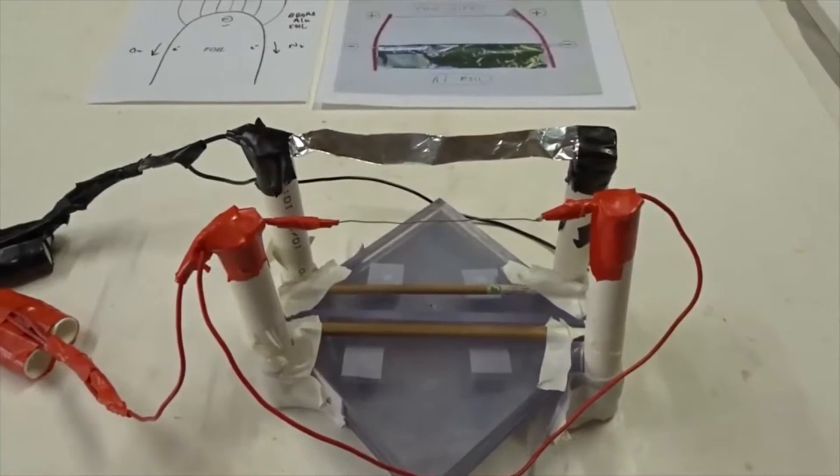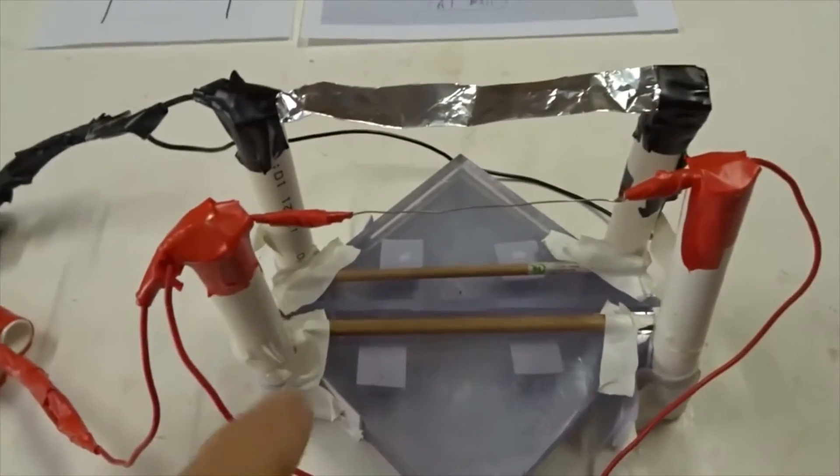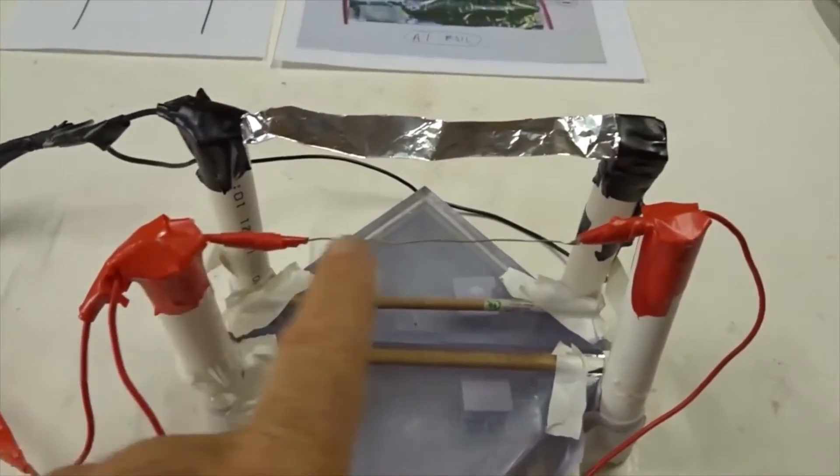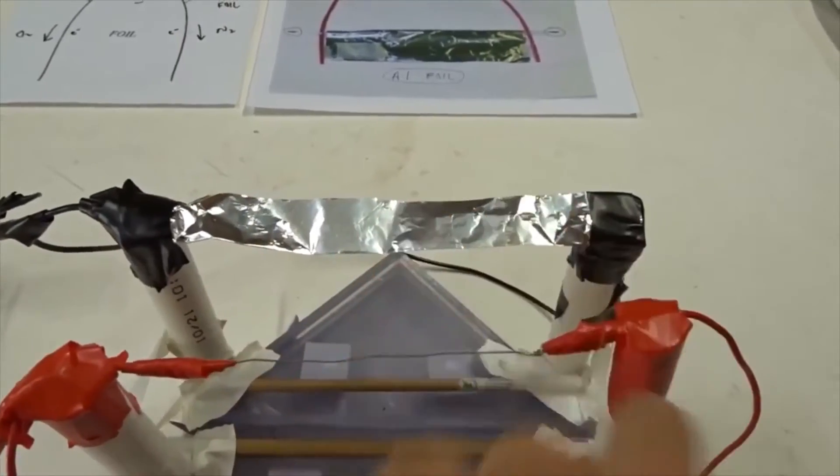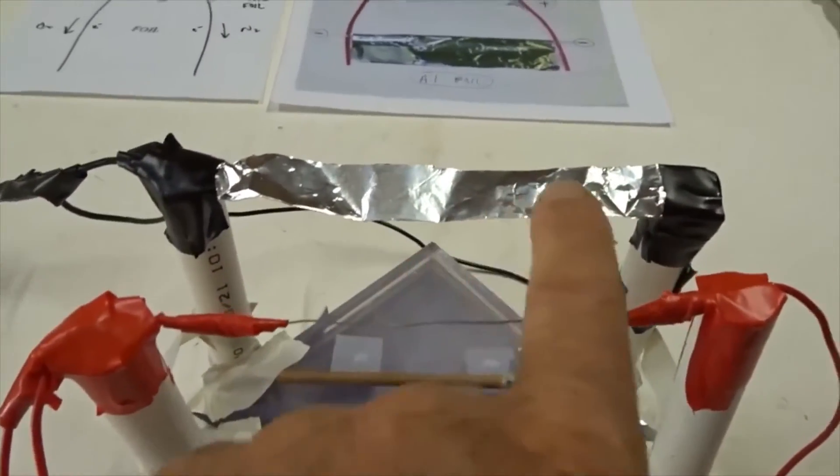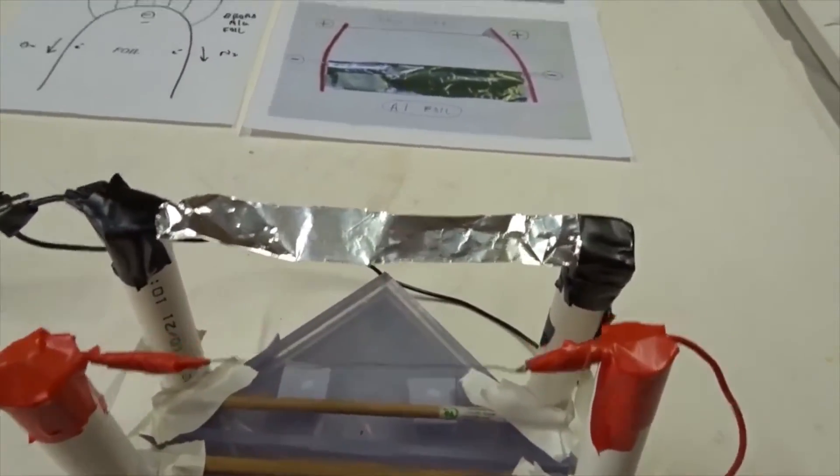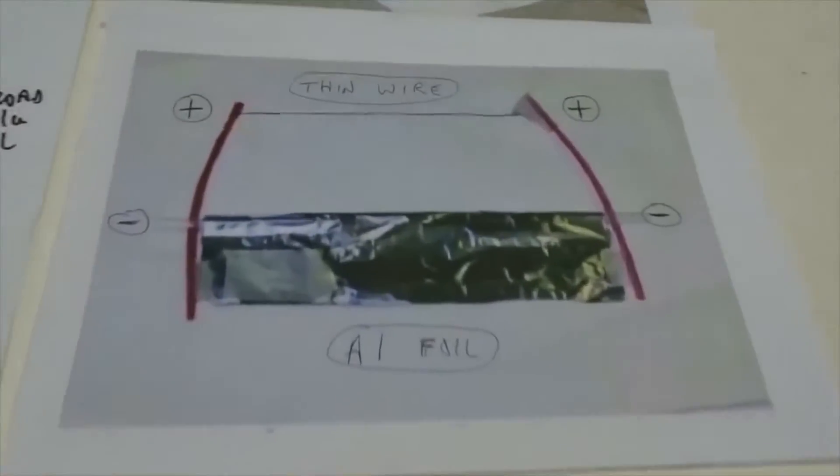Now another way to make an ion lifter or ion propulsion device is to attach your 40 kilovolt DC leads to both ends of the wires. You have a wire here, maybe a sheet of aluminum foil there. And that's what a lot of people do with ion lifters.